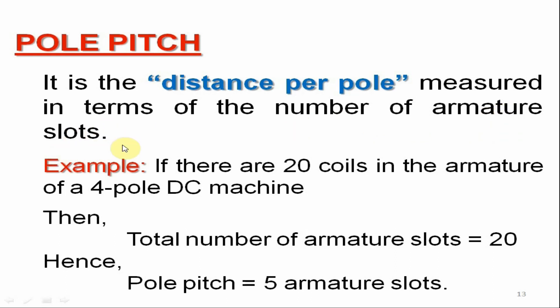For example, if there are twenty coils in the armature of a four-pole DC machine, then the total number of armature slots would be twenty. Dividing this number by the number of machine poles, we may calculate the pole pitch as five armature slots.